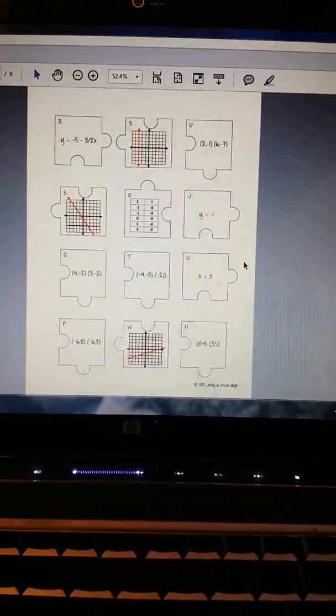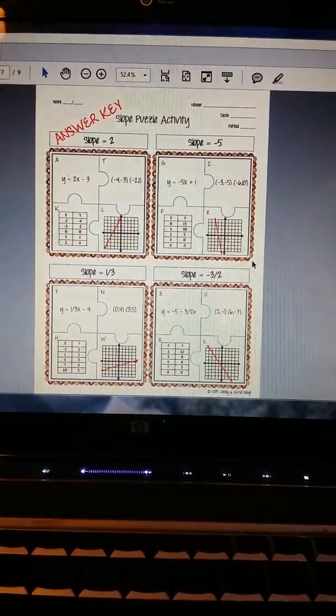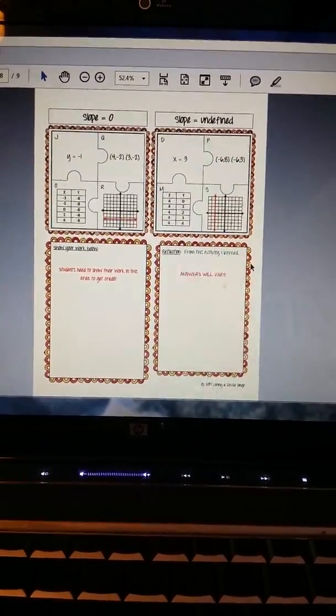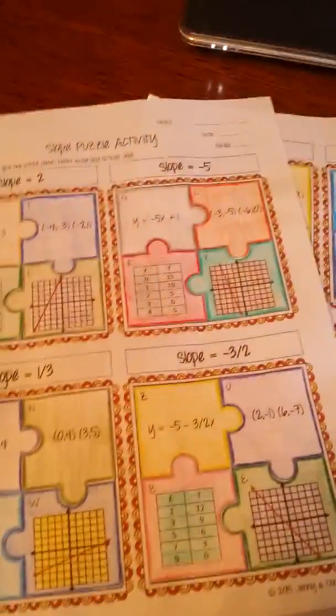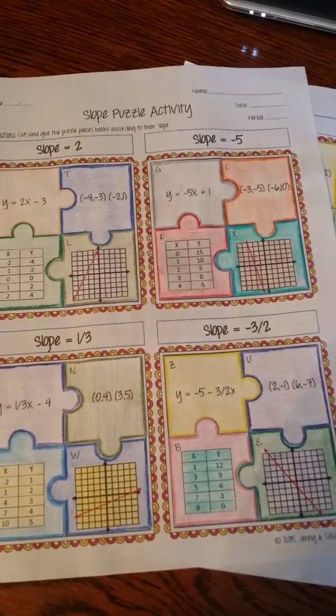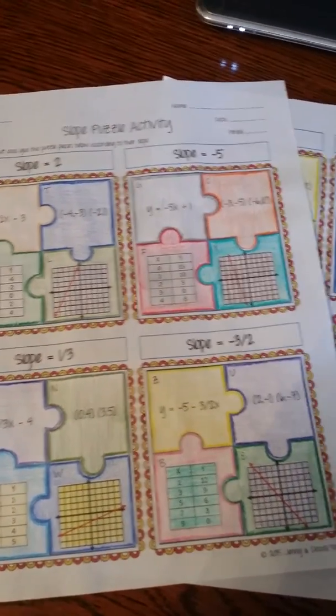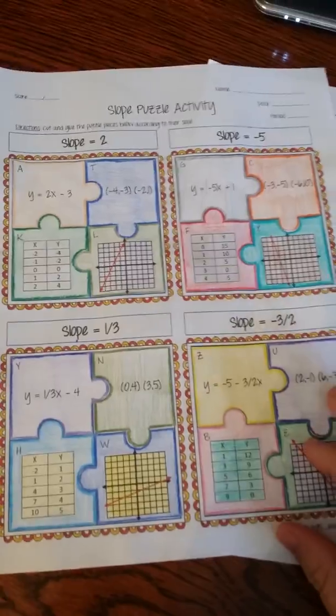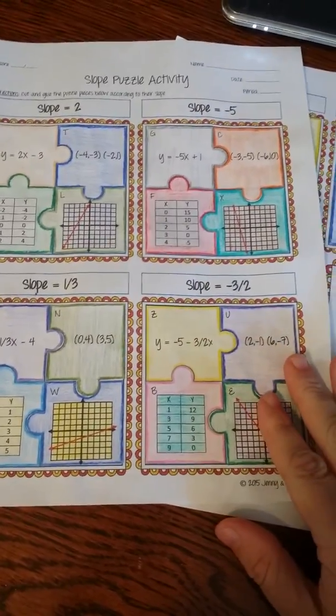There's the second page, and then I have the answer key. So here's a look at the completed activity so you can see how it would look. It is up to you if you want students to use colored pencils or markers and make it more colorful.